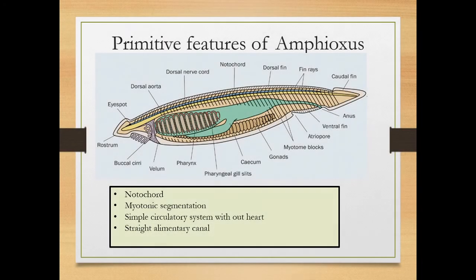Welcome to this video about the different features of Amphioxus — why Amphioxus is placed in a separate sub-phylum, what are its primitive features, degenerative features, and specialized features. Primitive features means characters that are ancient. One such character is the presence of the notochord, which is a primitive feature.